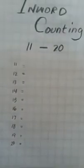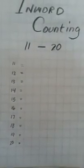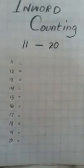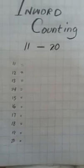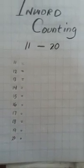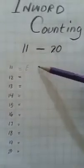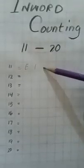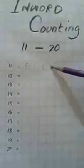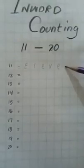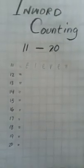now we write word counting. Kids, now tell me spelling of 11. E, L, E, V, E, N. 11. Now write with me kids. Write E, L, E, V, E, N. 11.